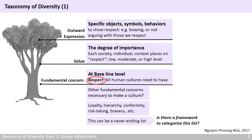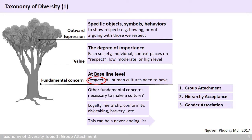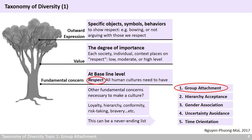Many theorists have tried to do exactly that. Here are the five most common fundamental concerns in the literature of the field: group attachment, hierarchy acceptance, gender association, uncertainty avoidance, and time orientation. Let's start with our first fundamental concern, a cultural element called group attachment.